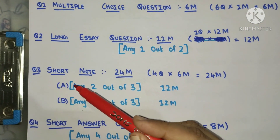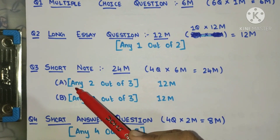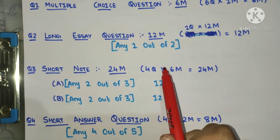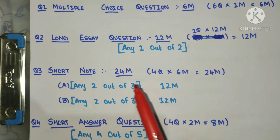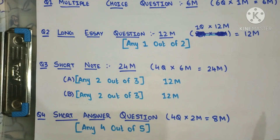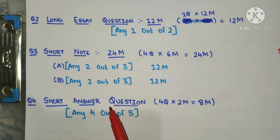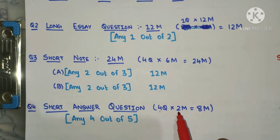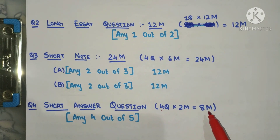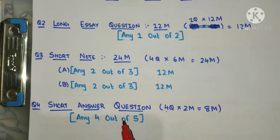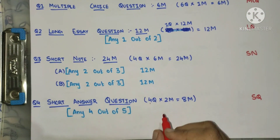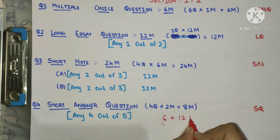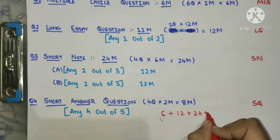For short notes, there will be question A and question B. From A, you have to attempt any two short notes out of three given, so 12 marks in A and 12 marks in B. Question four will be short answer questions — two to three sentences — you have to attempt four questions, each carrying two marks, totaling eight marks, chosen from five given. So: MCQ 6 marks, long essay question 12 marks, short notes 24 marks, and short answer questions 8 marks.